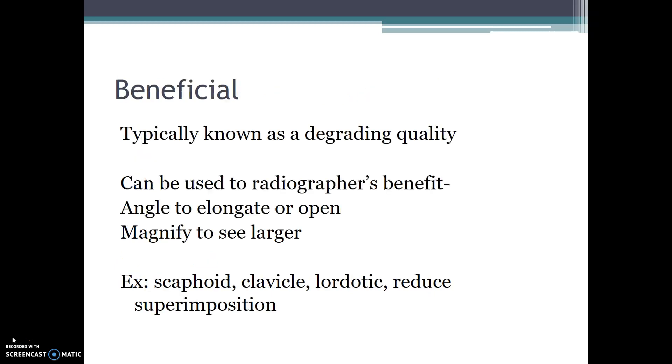Typically, distortion is known as a degrading quality, but it can be used to the radiographer's benefit. We can angle to elongate or open foramen. We can magnify to see something larger. We can also use a tube angle in order to reduce superimposition. An example of this would be a lordotic chest x-ray.